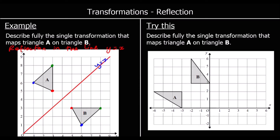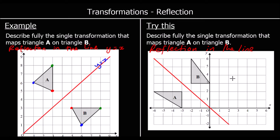Here's one for you to try — see if you can describe this transformation. Again, it's going to be a reflection — that's the first bit of information. And what is the line? What's the mirror line? In which line is it reflected? It's this line here.